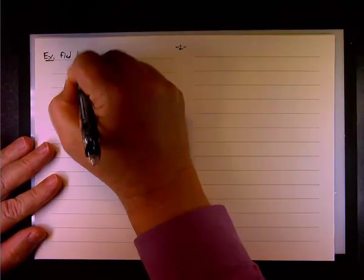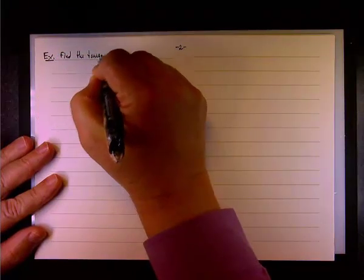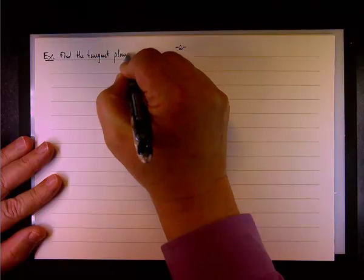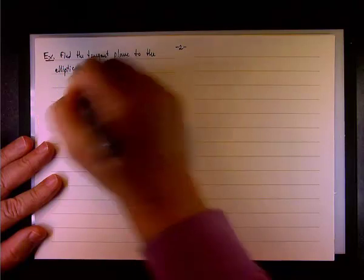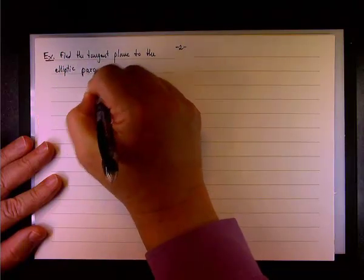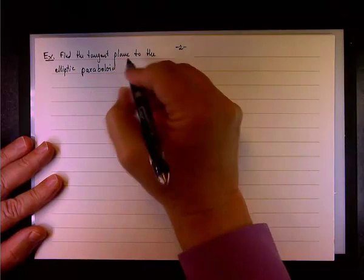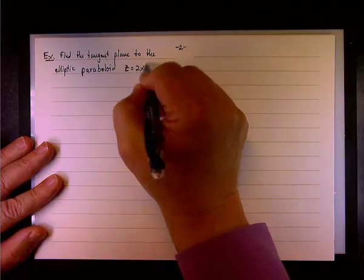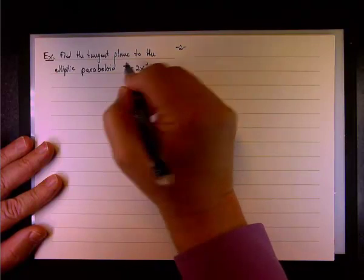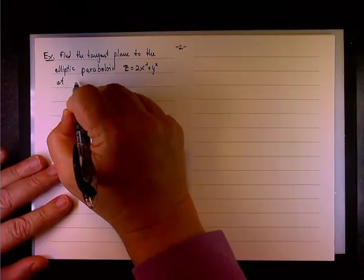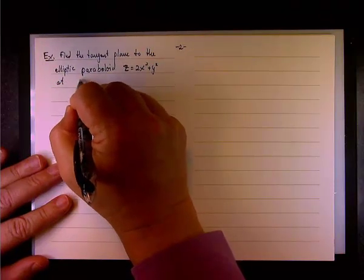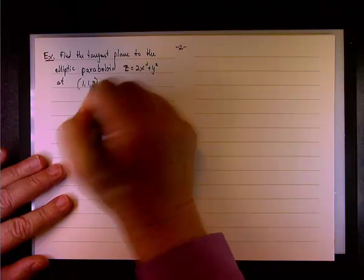We have the elliptic paraboloid - find the tangent plane to the elliptic paraboloid z equals 2x squared plus y squared at 1, 1 and 3.